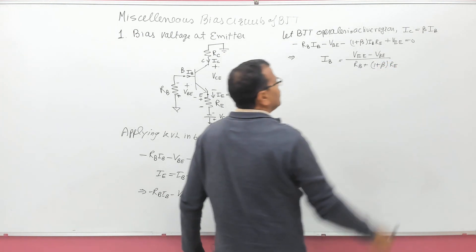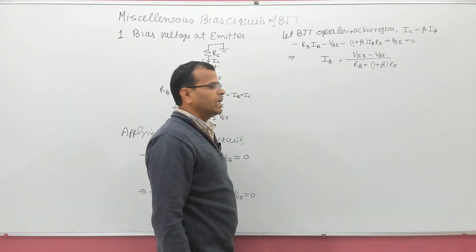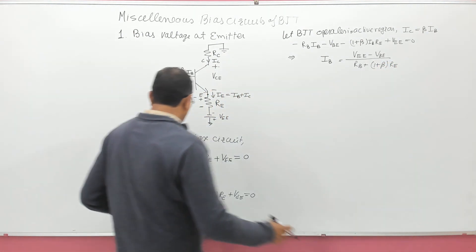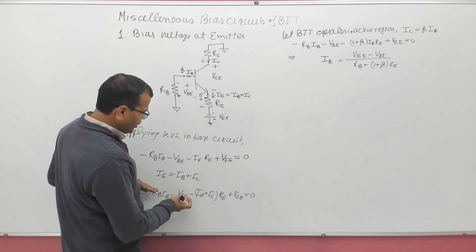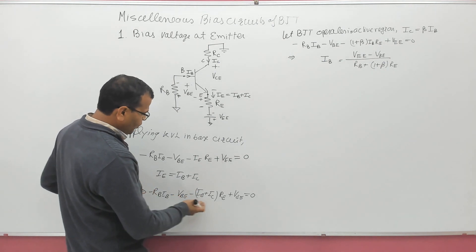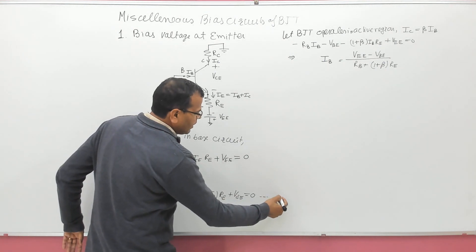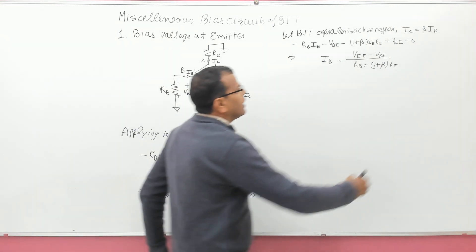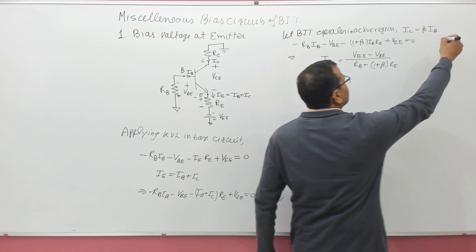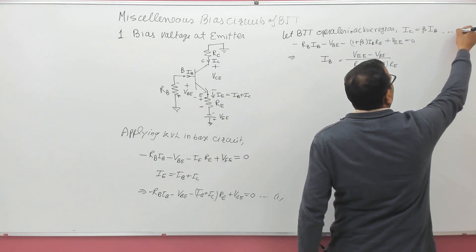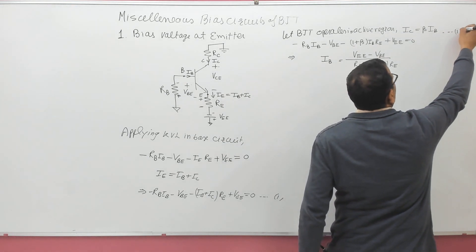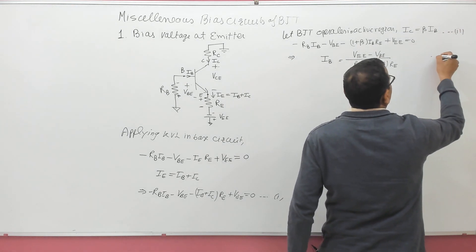When BJT operates in active region, IC = beta × IB. Substituting into the base circuit equation: minus RB × IB minus VBE minus (1 + beta) × IB × RE plus VEE = 0. This gives the base current IB = (VEE minus VBE) divided by (RB + (1 + beta) × RE). Call this equation 2. Then IC = beta × IB is equation 3.